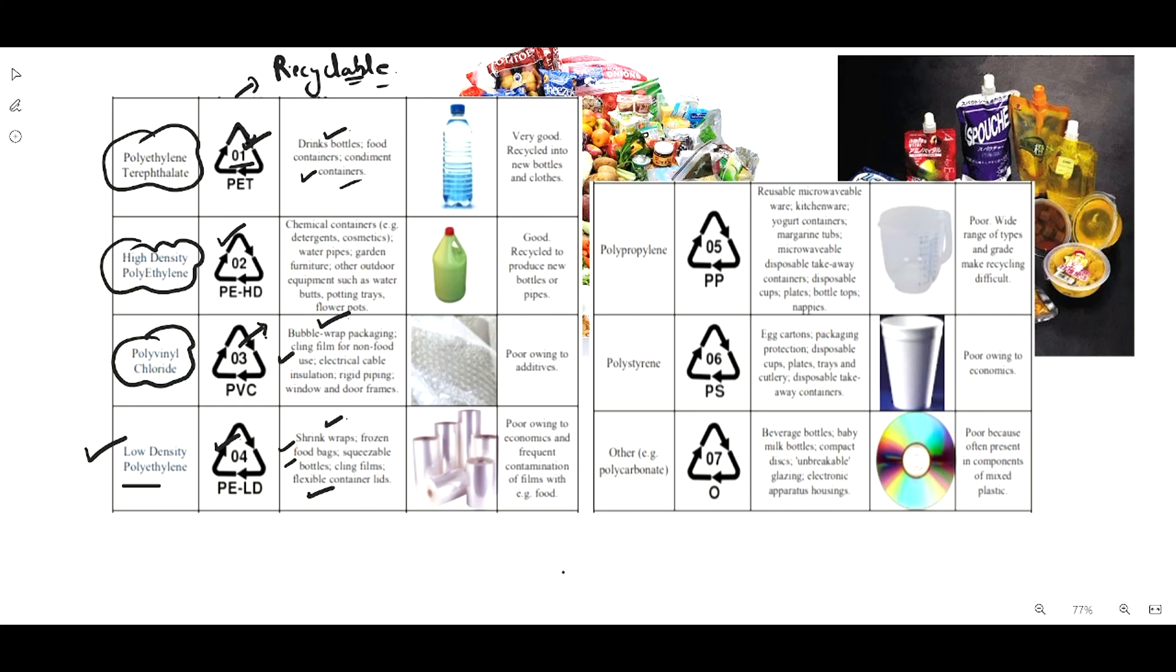Polypropylene (PP) comes under code 05 and is used for reusable microwaveable kitchenware, yogurt containers, margarine tubs, microwaveable items, and different types of disposable plasticware.